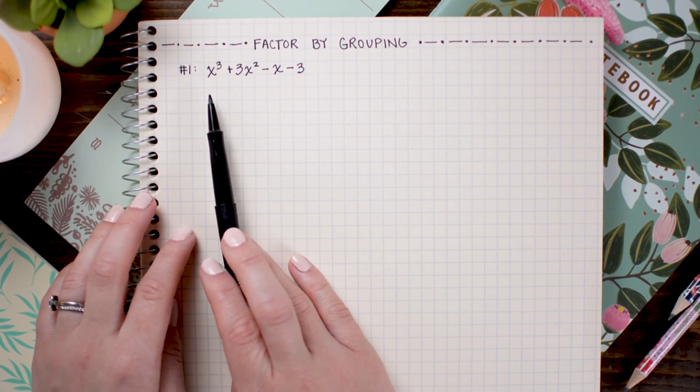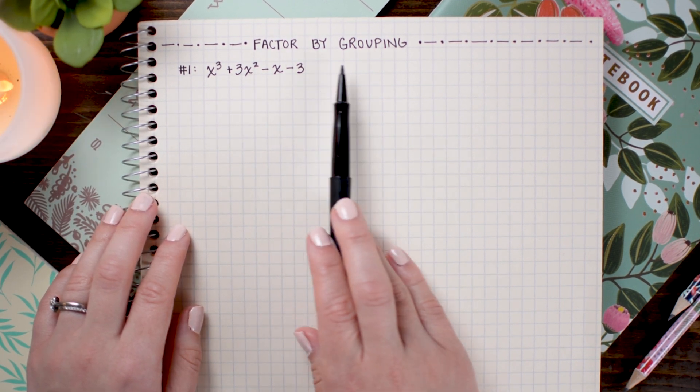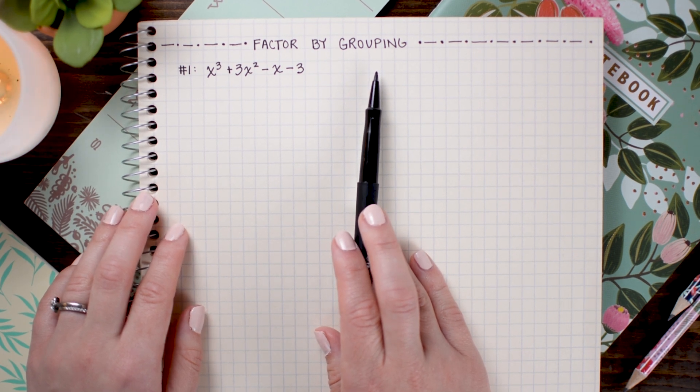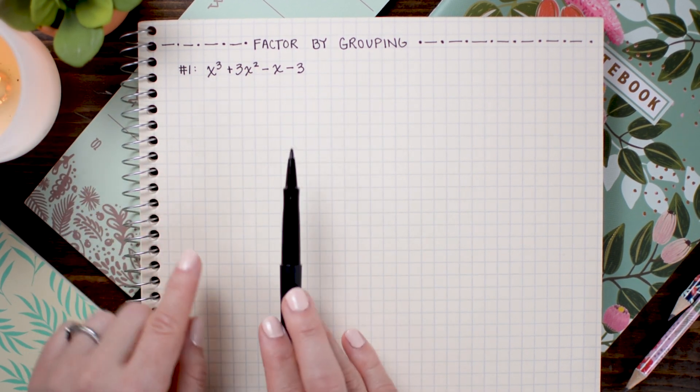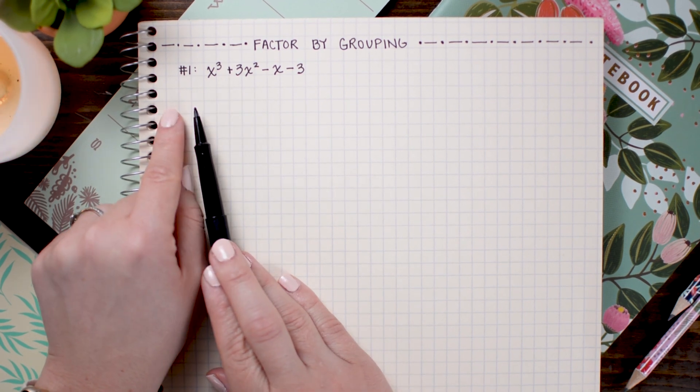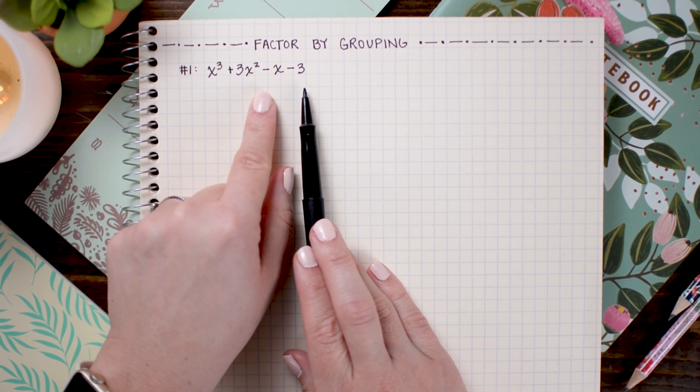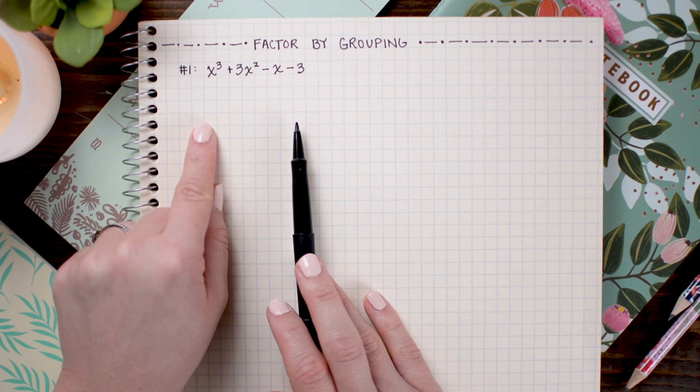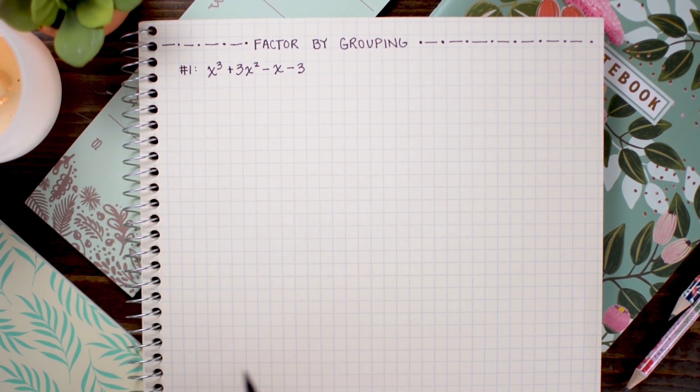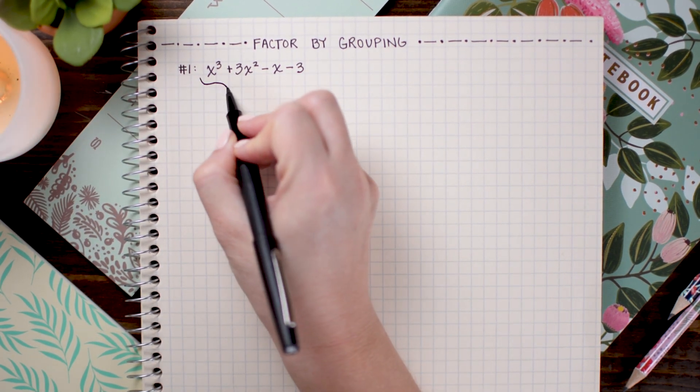In this first problem, we are asked to factor the polynomial x cubed plus 3x squared minus x minus 3, and we are using the Factor by Grouping method. Now, one thing you might notice in problems where you're asked to factor by grouping is that they tend to have four terms. And, that's because we are going to take the first two terms and factor out their GCF, and then we are going to do the same with the second set of two terms. We will also factor out their GCF. And, the hope is that in the process of doing this, you will get two binomials which are matching, which you can factor out one more time, and then get down to a factored form. That's pretty confusing when we say it out loud, but it will make a lot more sense when we actually do the problem. So, let's begin by finding the GCF of the first two terms.